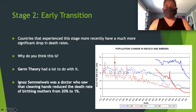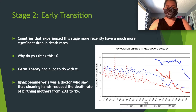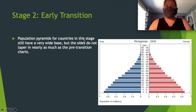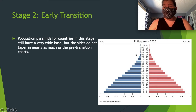Germ theory is what we associate with this stage. Ignaz Semmelweis was a doctor who observed that cleaning hands reduced the death rate of birthing mothers from 20% to 1%. Something as simple as proper hygiene can have such a dramatic impact on population. The population pyramids for countries in this stage still have a very wide base, but the sides do not taper as much — people are living longer, so there are more people in the middle age groups.